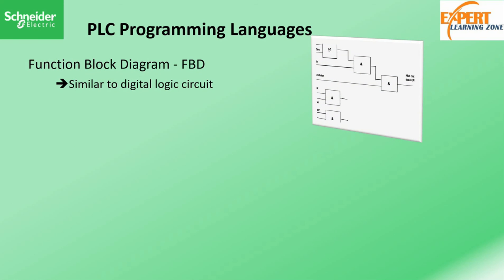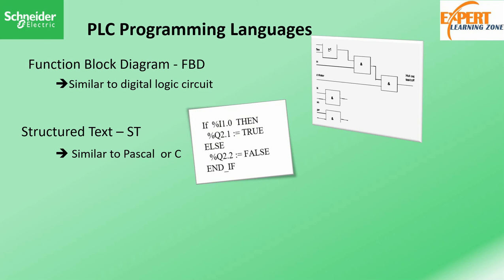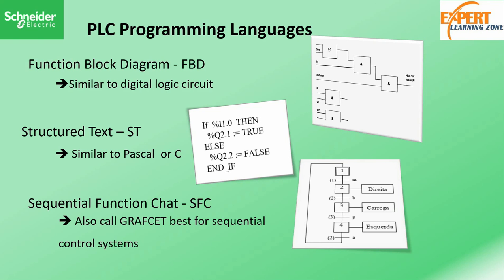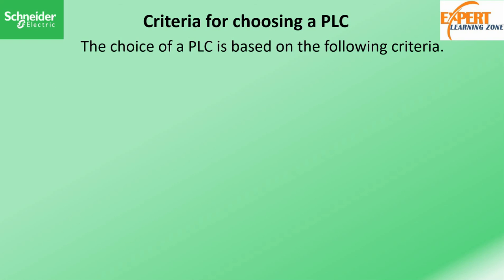The third language is the Function Block Diagram, which is very similar to digital logic circuits, where we pick logic blocks and build the logic together — for example AND gates and OR gates. The fourth is Structured Text, which is similar to Pascal or C, and is used to build complex algorithms and complex industrial automation systems, particularly in scenarios where Ladder Logic or Function Block Diagram becomes too complicated. Finally, we have Sequential Function Charts, also called Grafcet, used to implement automated systems that function based on predefined sequential steps — for example, a streetlight system.